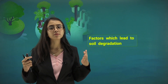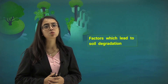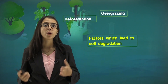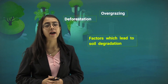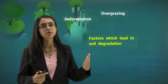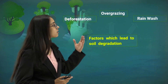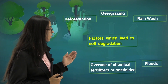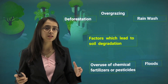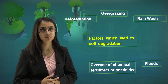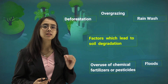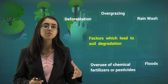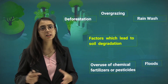What are the factors which actually lead to soil degradation? Deforestation, overgrazing — when we graze or rear our animals it leads to exhaustion of resources. Rain wash, floods, and overuse of chemical fertilizers and pesticides on soil resources results in decreasing quality of the soil. After a point, the soil becomes unfit for cultivation or any kind of activity.